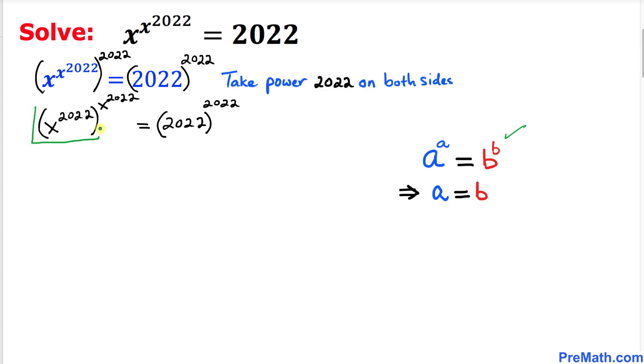Then we can certainly write this one as x power 2022 equals 2022.